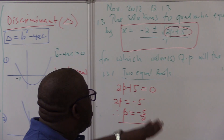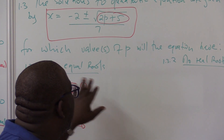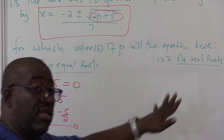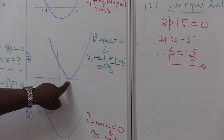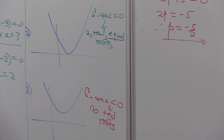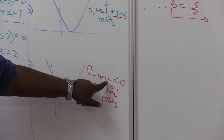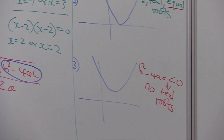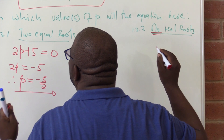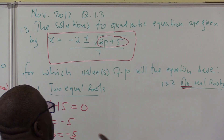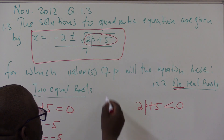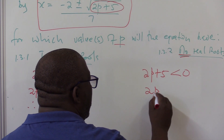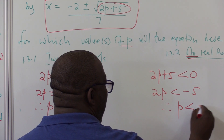For the next part: for which value or values of p will the equation have no real roots? The keyword is no real roots. Which diagram is that? This is the one where we have no real roots. What do we know about its discriminant? Its discriminant is negative. Because of this keyword — no real roots — the discriminant must be negative. So 2p plus 5, which is our discriminant in this case, must be less than 0. So 2p is less than minus 5, therefore p is less than minus 5 over 2.